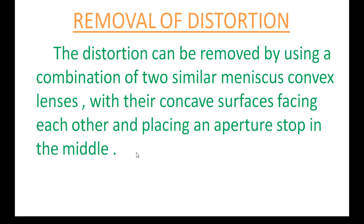This is about distortion — what is distortion and how to minimize distortion. The image of a plane square object formed by the lens is not of the same shape; that is, it is completely distorted. That type of aberration is called distortion. The reason for distortion is that the same lens produces different magnification for different axial distances.